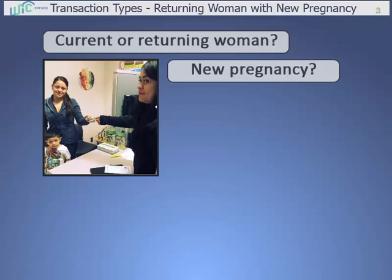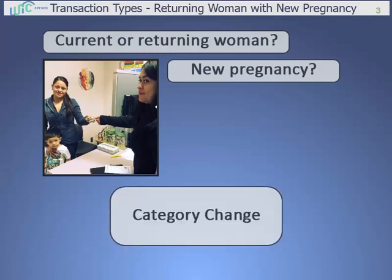When you have a woman come in with a new pregnancy who was on WIC in the past or is on WIC now, it's tempting to just change her category, but that will cause problems in TWIST. Instead, you must choose the correct transaction type to start a new certification for her.